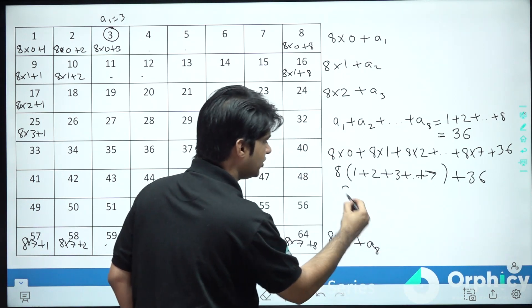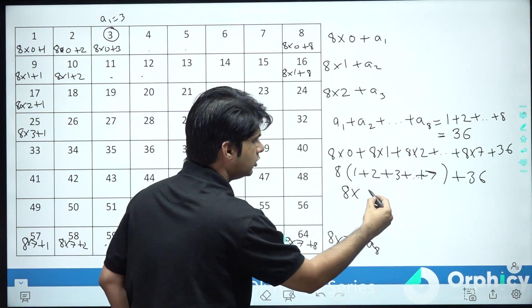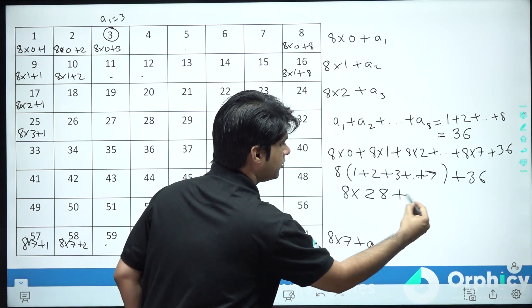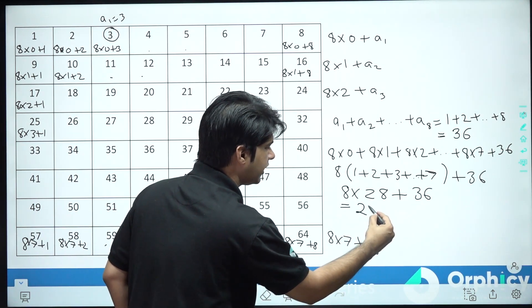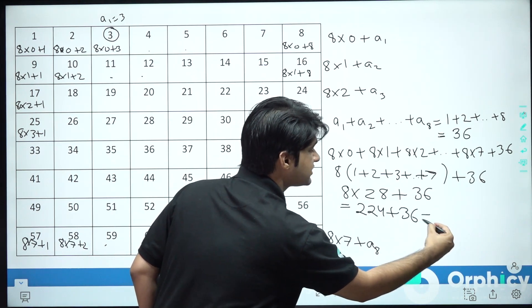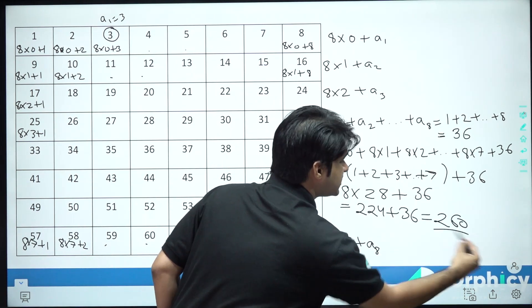This will become 8 into 28 plus 36. This will become 224 plus 36. That will be 260.